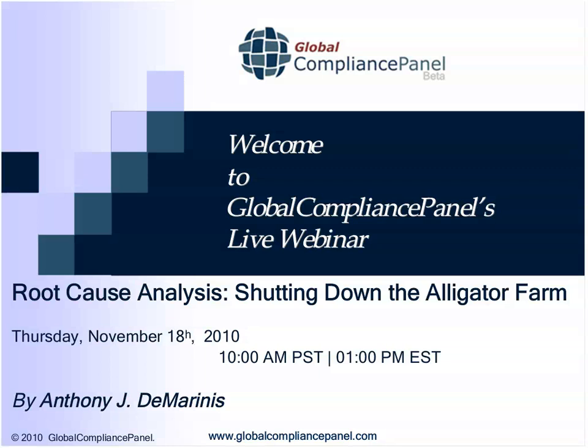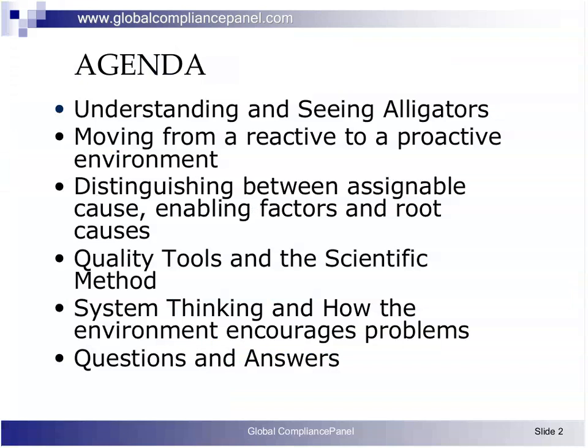Some key points we'll be reviewing today include how to approach and identify root causes and the obstacles to improvement, so that we can move from a reactive to a proactive environment. We'll talk about what root causes are and the analytical methods to identify them. We'll also review some quality tools, interrelationships, system thinking, and how the organization structure and environment actually supports and encourages problems — this is why the talk is subtitled Shutting Down the Alligator Farm. We'll also cover strategy for robust corrective actions to prevent recurrence and how to document the failure investigation, followed by questions and answers.